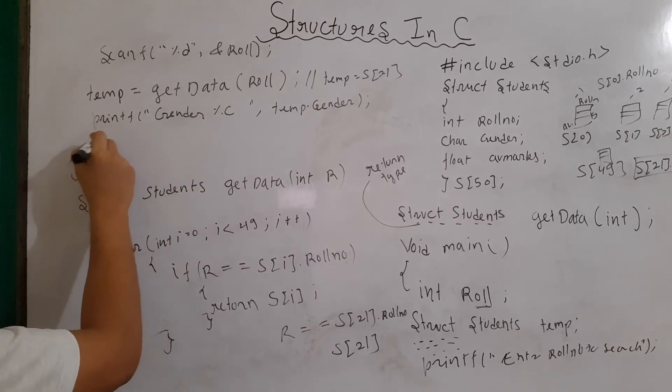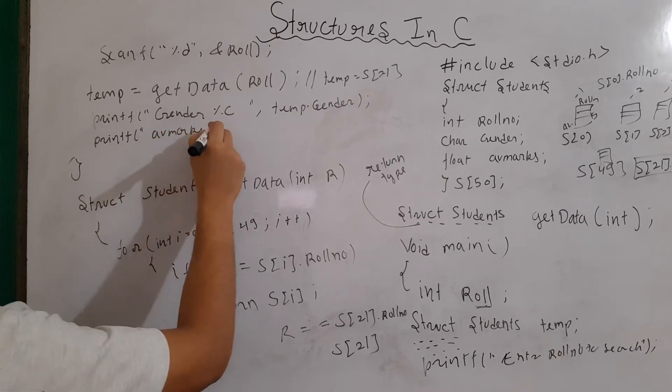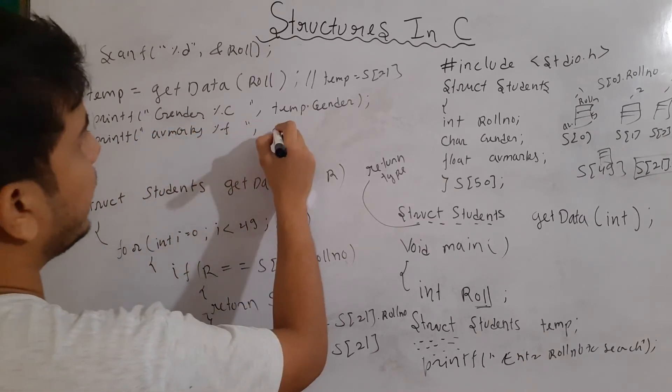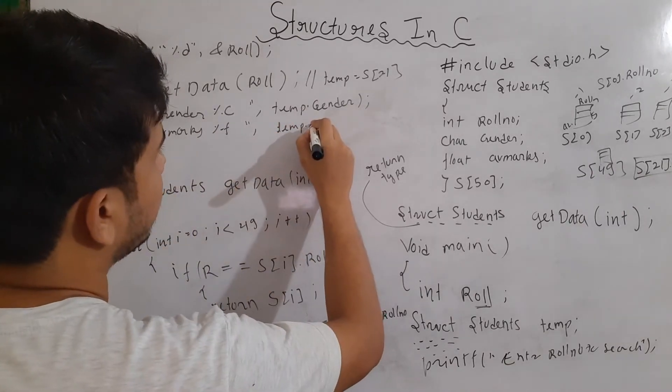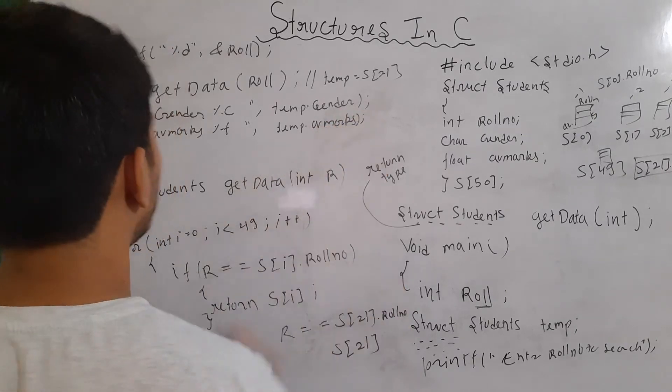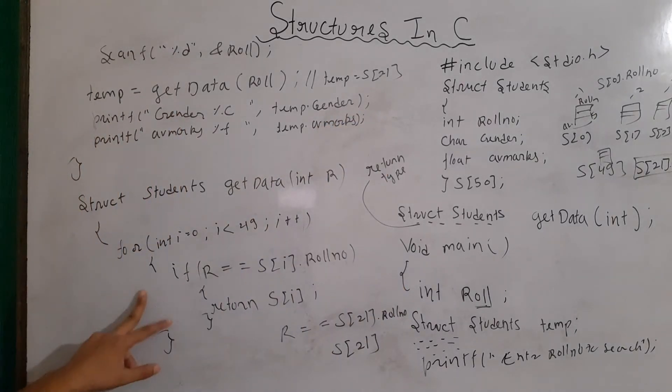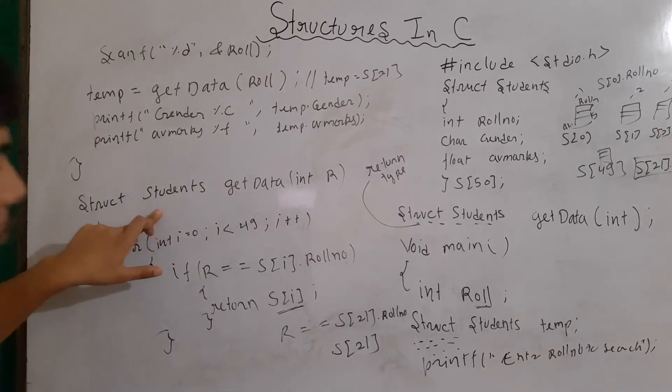So, we got the gender and then I can write here printf then avmax %f and then I can write here temp dot avmax. And that will be all. So, here it will search for the value and now here it is returning as the structure variable.